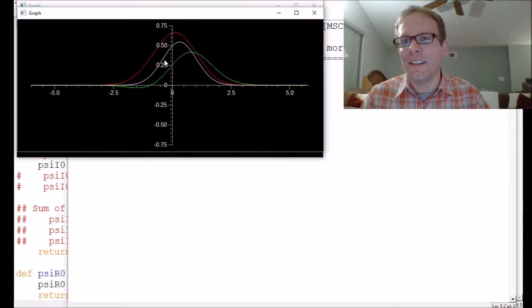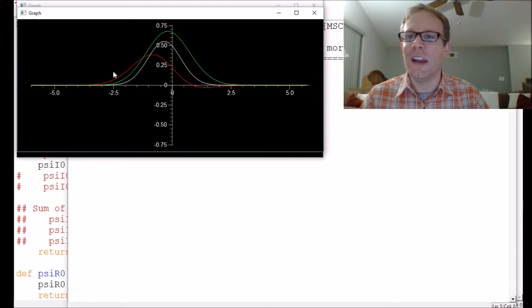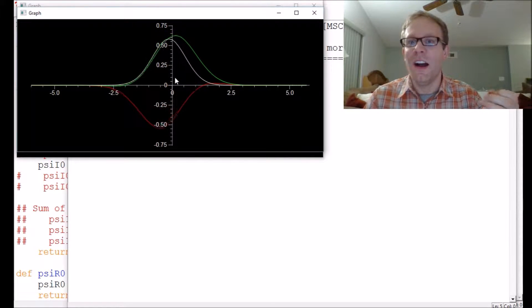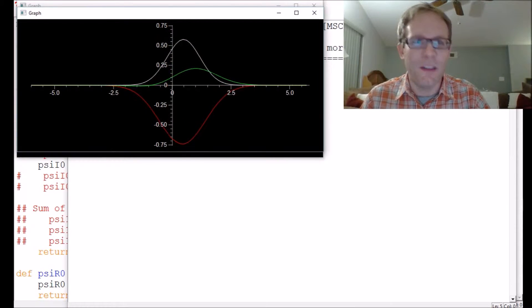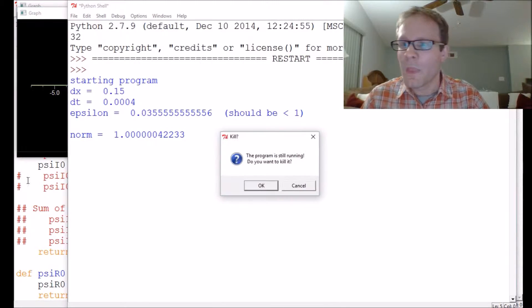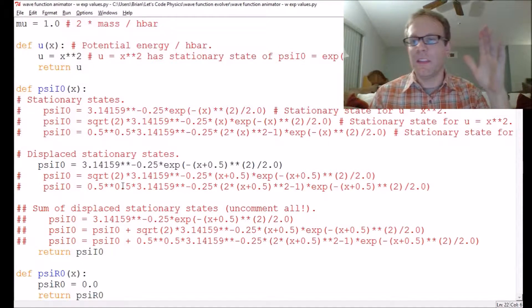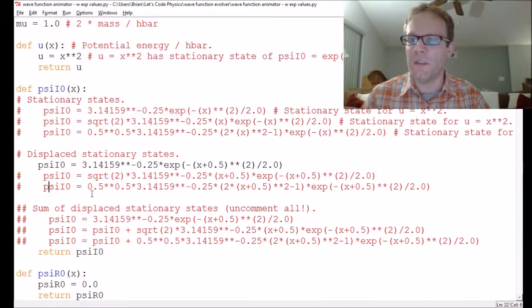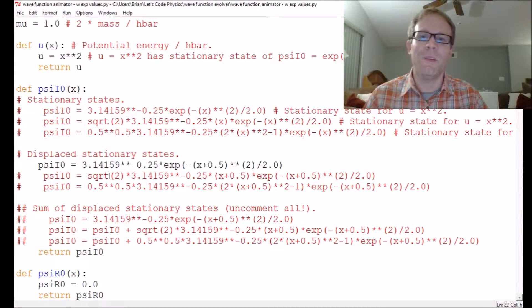We've figured out that this thing is working correctly because when we put in these Gaussian shapes for a harmonic oscillator potential, they just go back and forth, which is what you would expect. The wave function stays pretty well normalized. We have to adjust some parameters like the time step and spatial step to make sure it stays normalized, but that's working out pretty well.